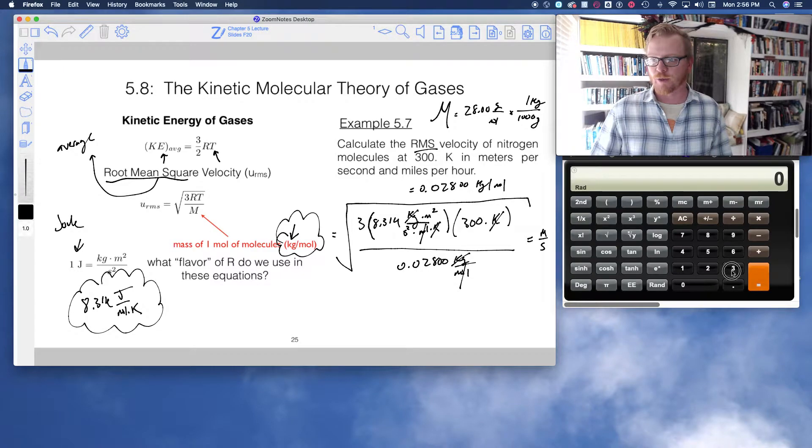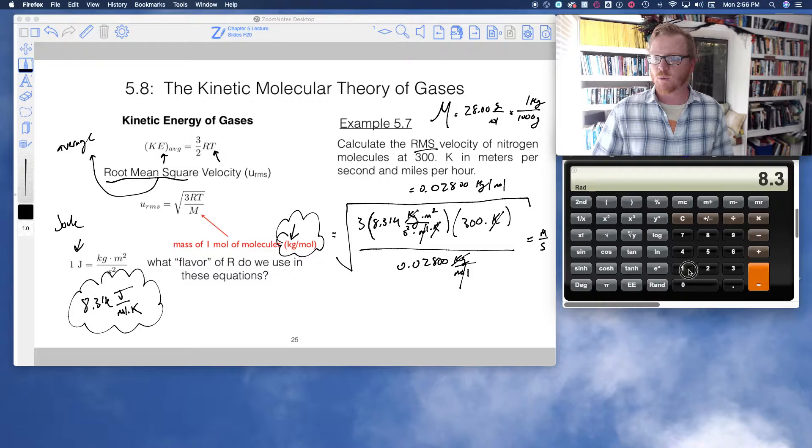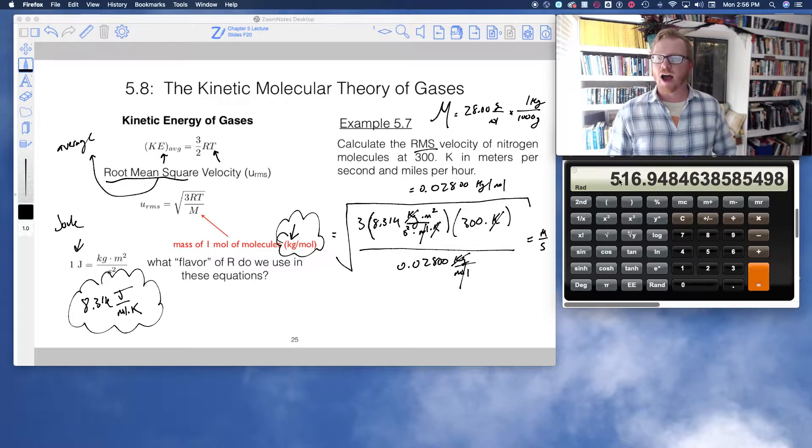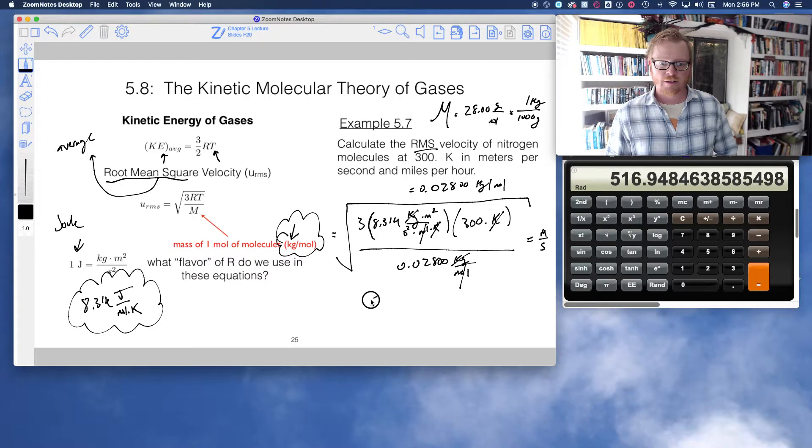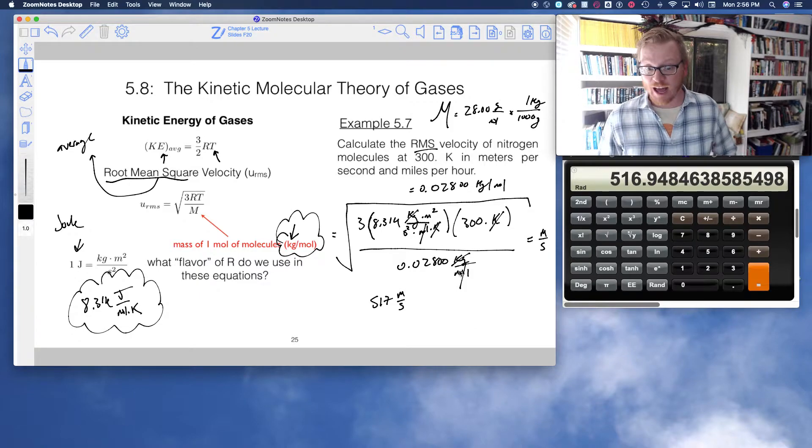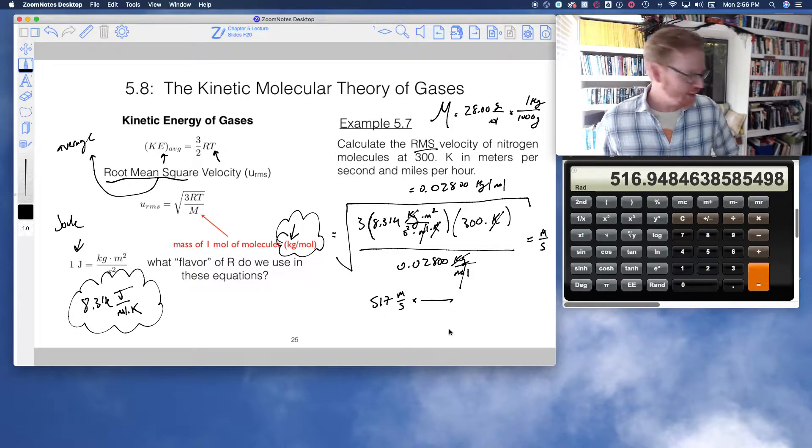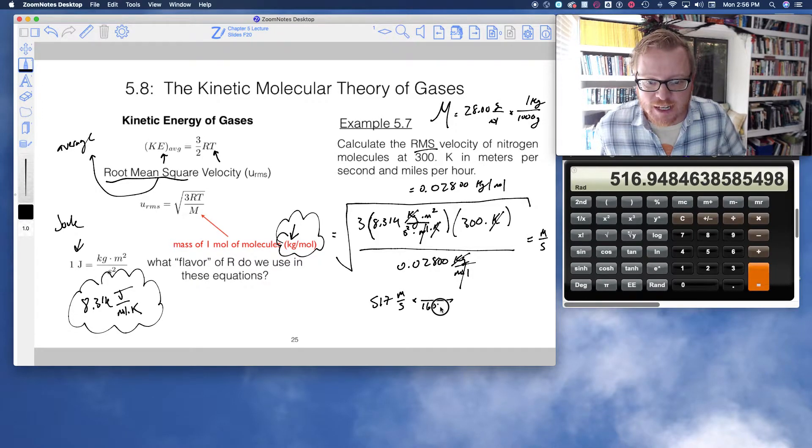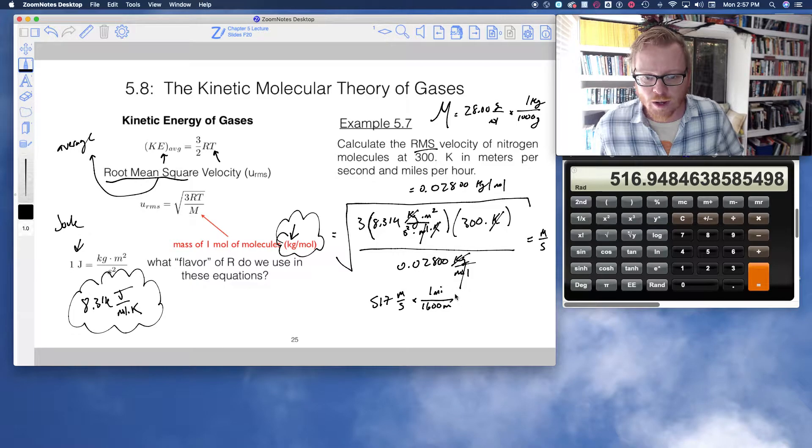So let's do it. It's a crazy number that we end up getting. So three times 8.314 times 300 divided by 0.028. And I got to take the square root of this whole thing. That button right there, yes. That would be 517.